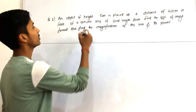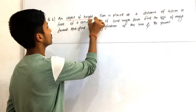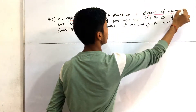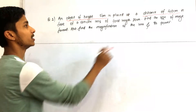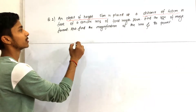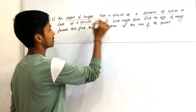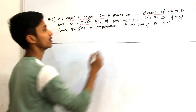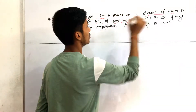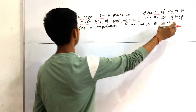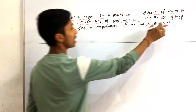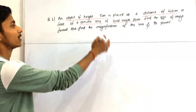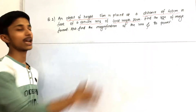Here we have given: height of object is 5 centimeter, object distance is 40 centimeter, and the lens is a convex lens — so the power will always be positive. Focal length is 20 centimeter. We have to find the size of image formed, that is the height of image, also find the magnification of the lens and its power.